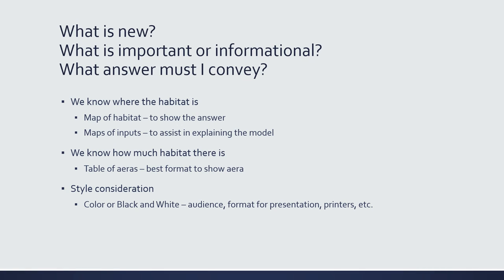The first three questions — what's new, what's important, what's informational, what answer are you trying to convey — all come down to the same sort of things. Now that we've done all of our GIS work, we know where the habitat is, so obviously we need a map of the habitat. We could also use maps of inputs to help people understand how you got to the answer. Our question is about how much habitat there is in West Virginia, and numerically the best way to convey that is probably with a table.